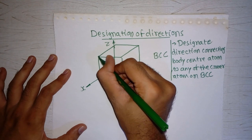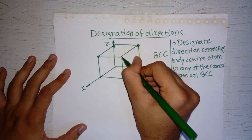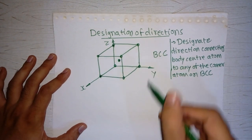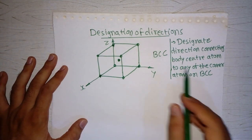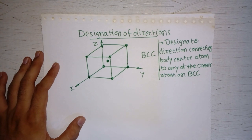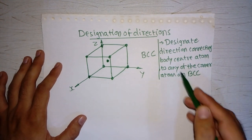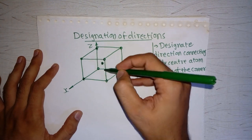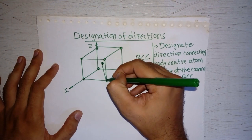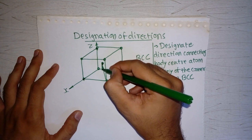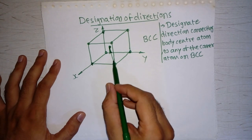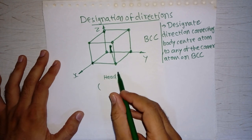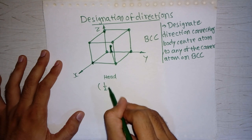We know that atoms are situated on the corners in case of BCC, and there is one atom at the body center. As per the problem statement, let's take this direction — body center to any corner atom. The coordinate values of the head are one-half, one-half, and one-half.